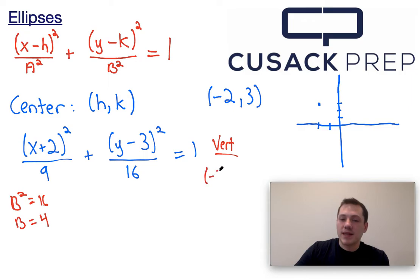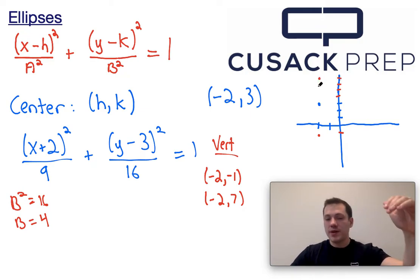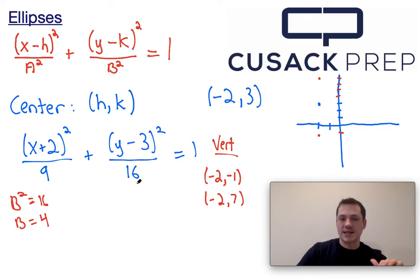are going to change the y coordinate by 4. So the x coordinate is going to remain the same. We're going to have negative 2. We're going to go down 4 from 3. 3 minus 4 is going to be negative 1. And we're going to go up 4 from 3. 3 plus 4 is going to be 7. So our vertices are going to be the points negative 2, negative 1, and negative 2, 7. Just going up 4 units and down 4 units because the 16 is under the y.